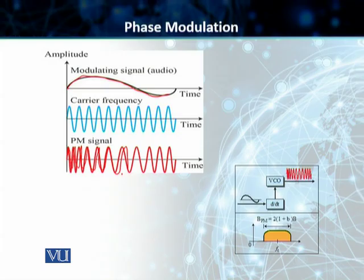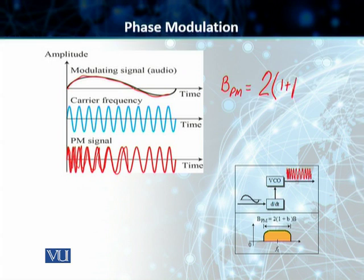Students, in this particular case, as represented by the lower right-hand figure, your bandwidth is equal to 2 into 1 plus beta, multiplied by B.